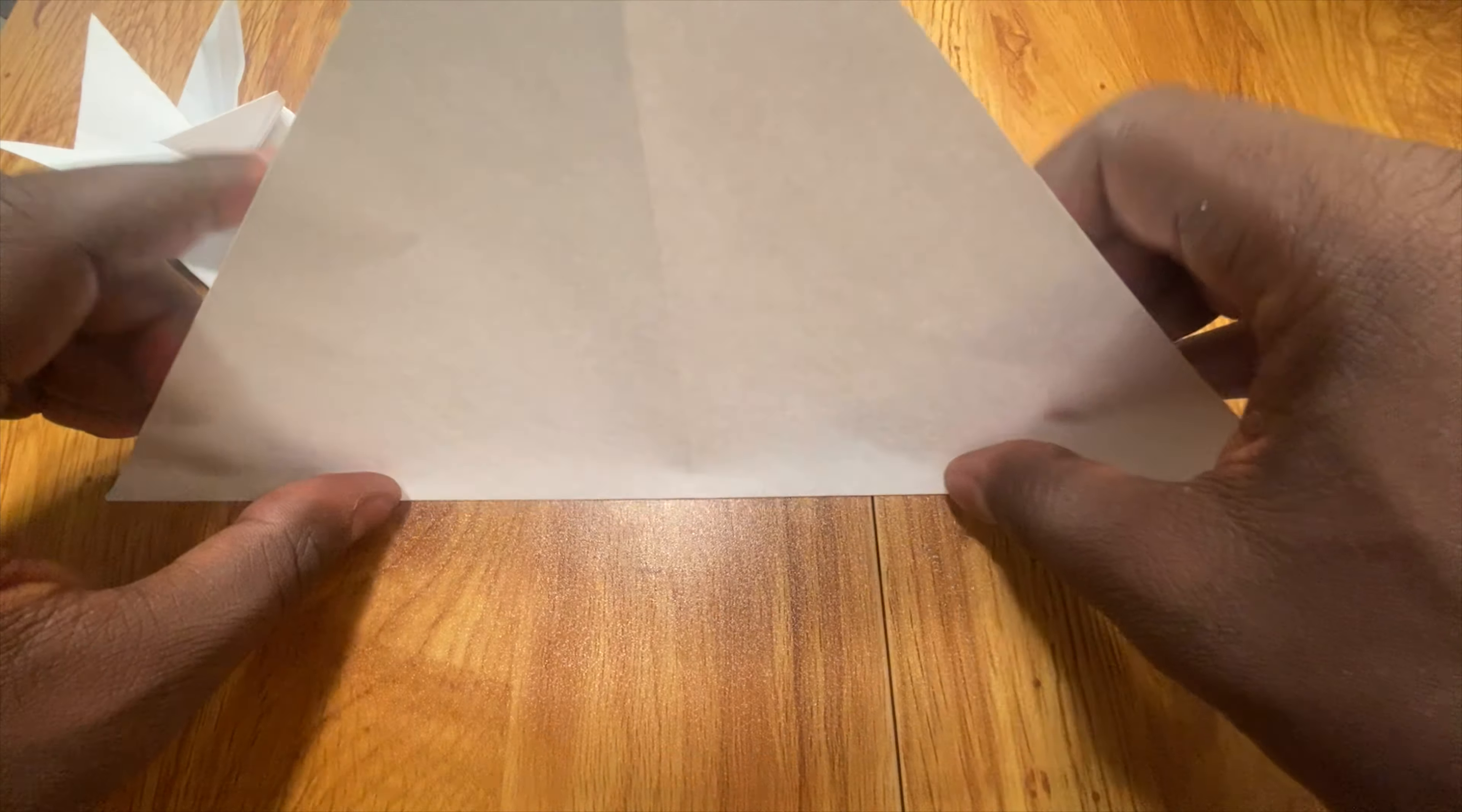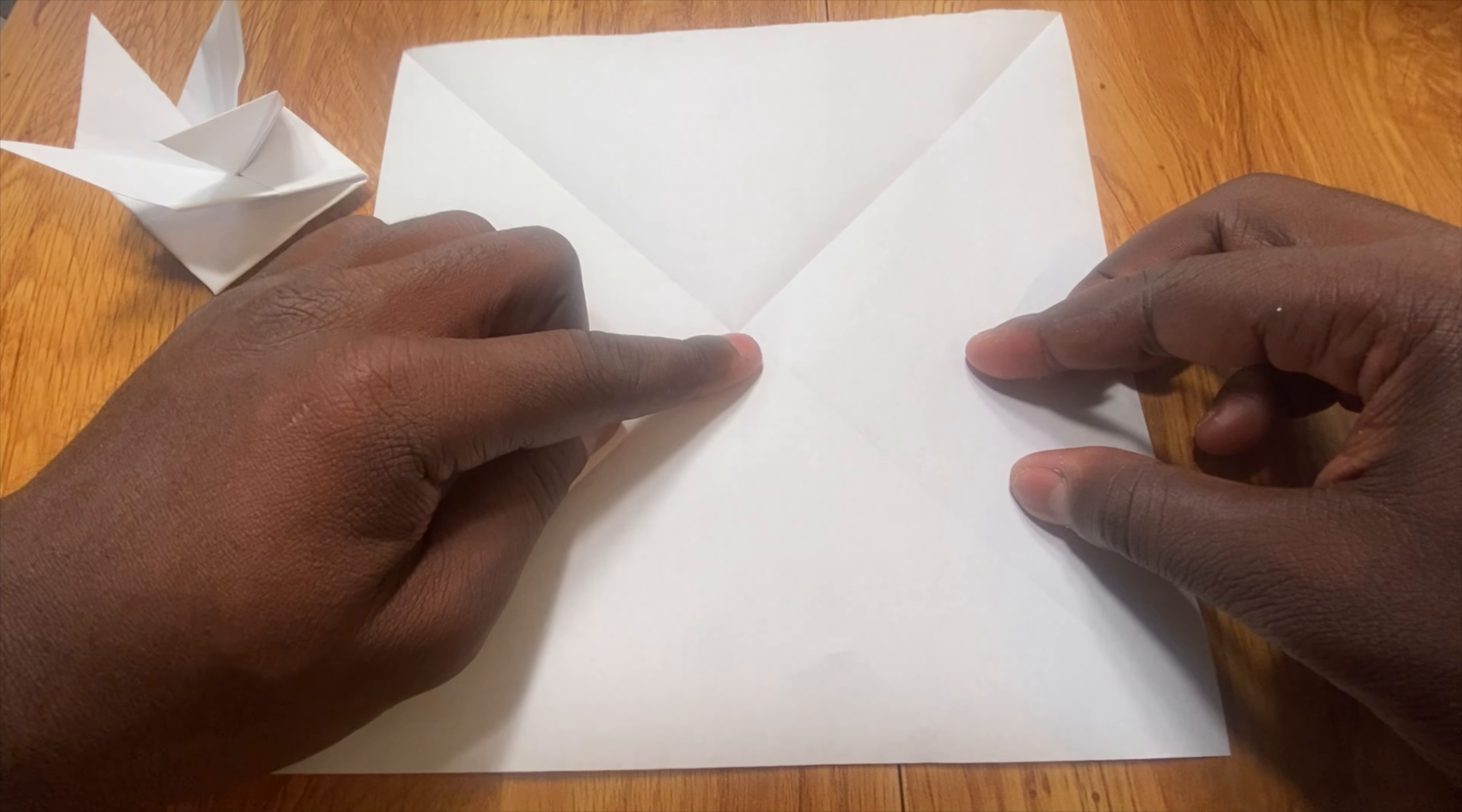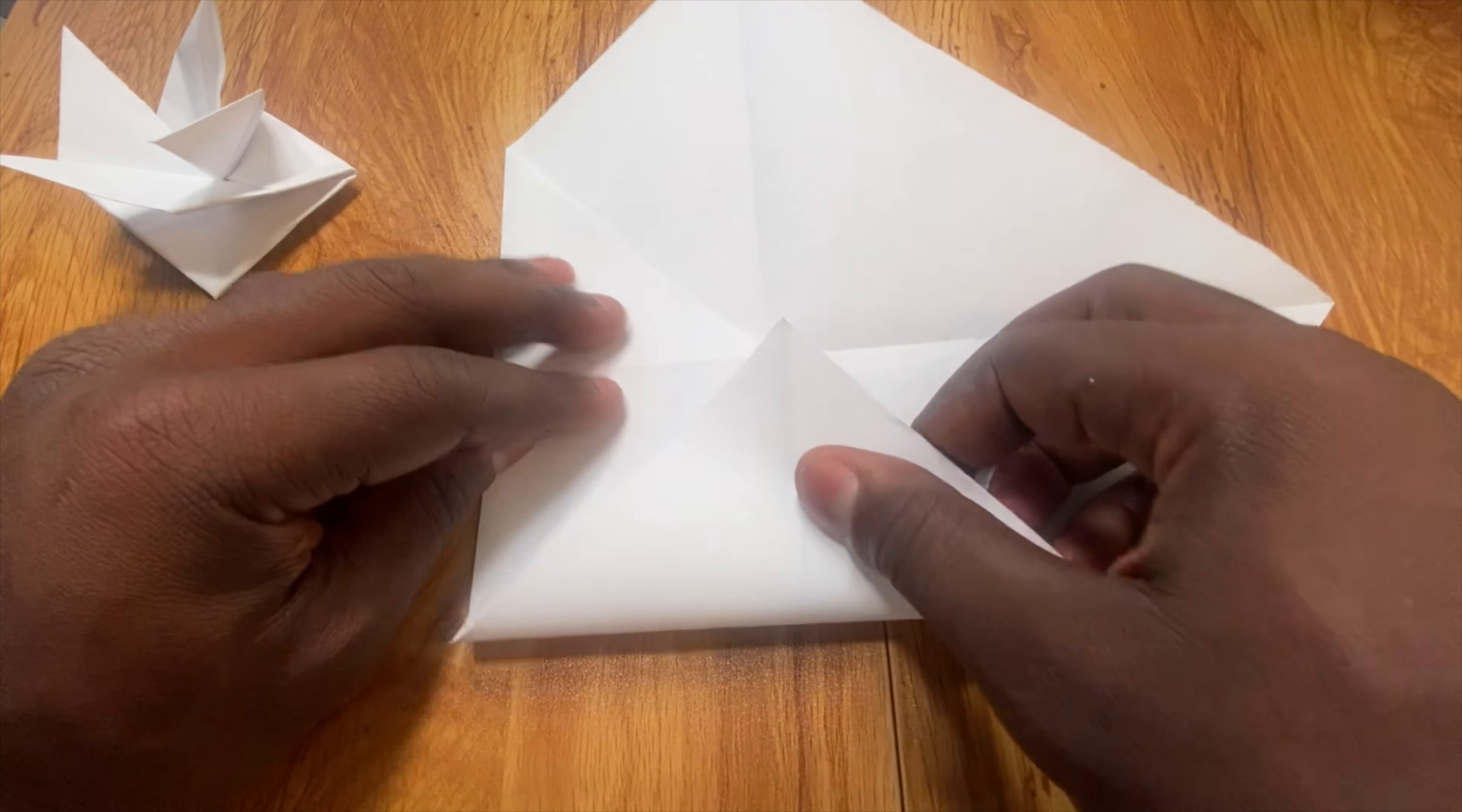And then unfold. Now we should have an X in the middle of our square. The next step we're going to fold each of the four corners into the center point like this, then we'll rotate and repeat.